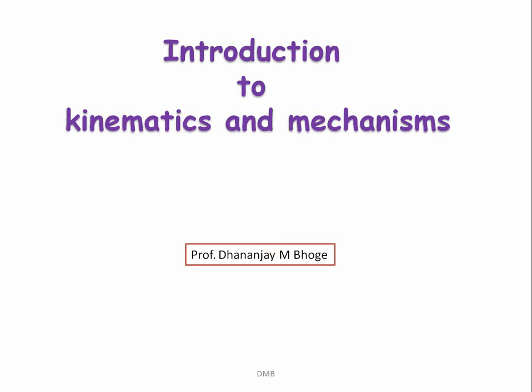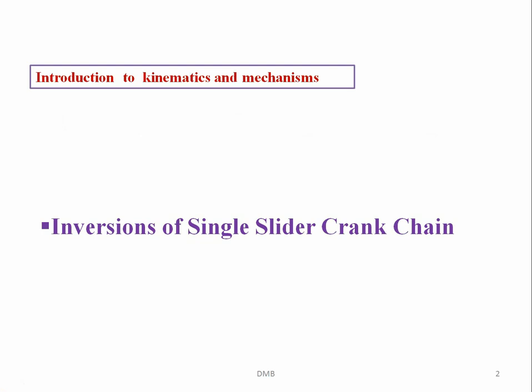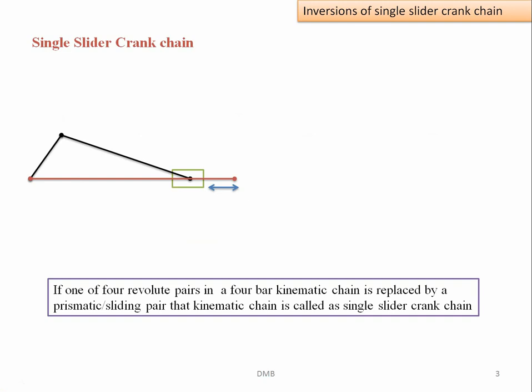Welcome to the lecture series on introduction to kinematics and mechanisms. Today we will discuss the inversions of single slider crank chain. A single slider crank chain is obtained as an equivalent linkage of a four bar chain by replacing one of the turning pairs in a four bar chain by a sliding pair.